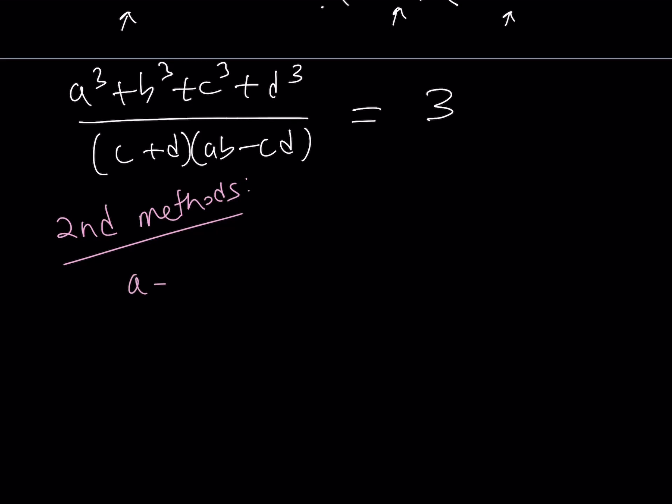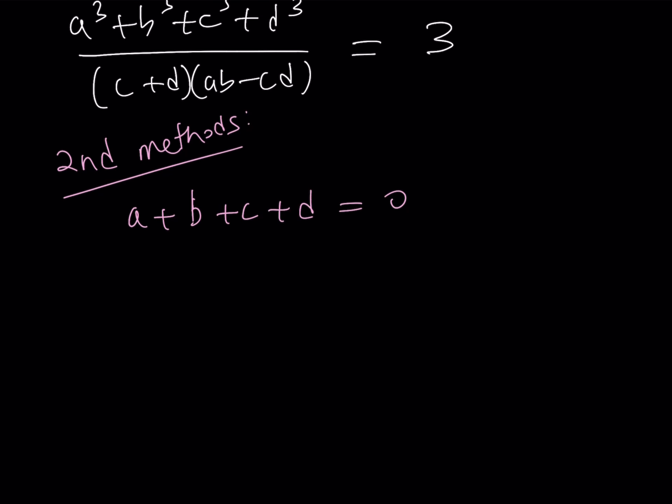So here's the second method. The second method involves the following. I know that a plus b plus c plus d is equal to 0. And I'm trying to evaluate this expression. Since they didn't tell us anything about the specific values of a, b, c, d, we have the freedom to choose what we want for a, b, c, and d.